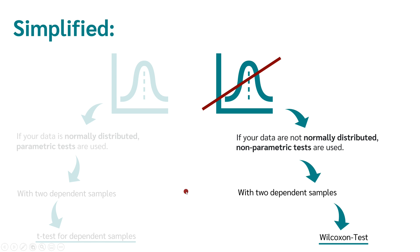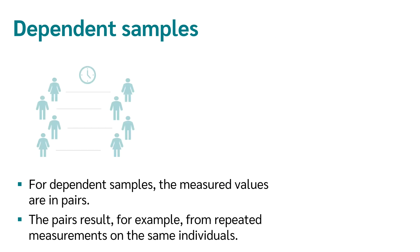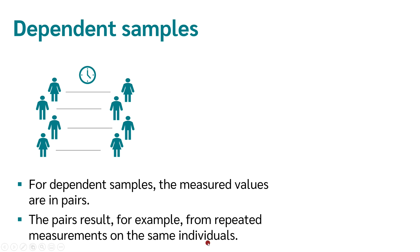You might think you could just always use the Wilcoxon test and never have to check the normal distribution. At the end of this video, I will show you why you should always use the t-test if it's possible. First, a little reminder of what dependent samples are: in dependent samples, the measured values are always available in pairs. The pairs result from, for example, repeated measures of the same person.